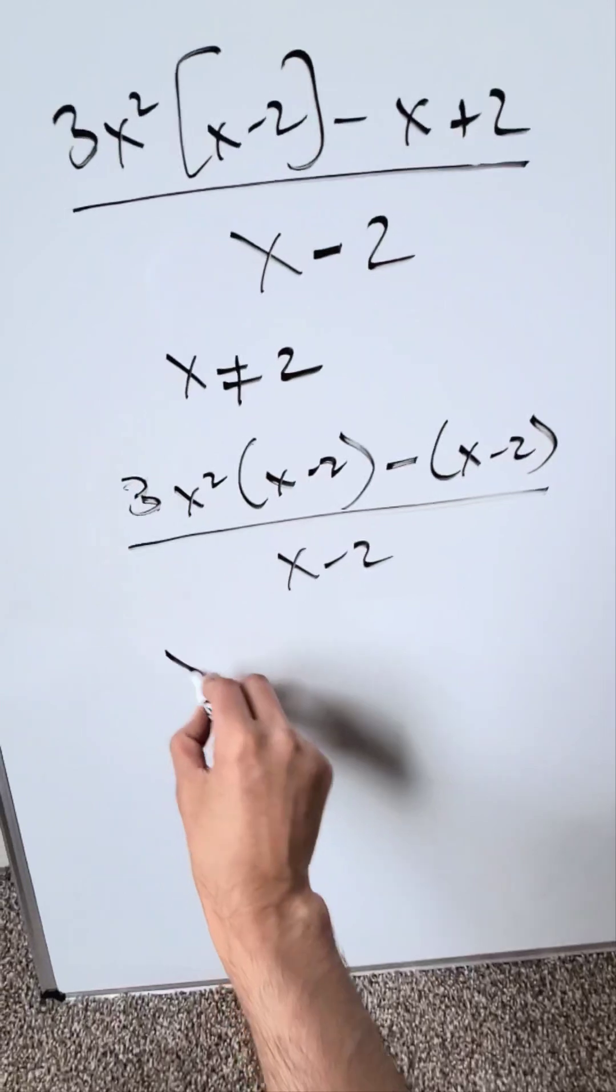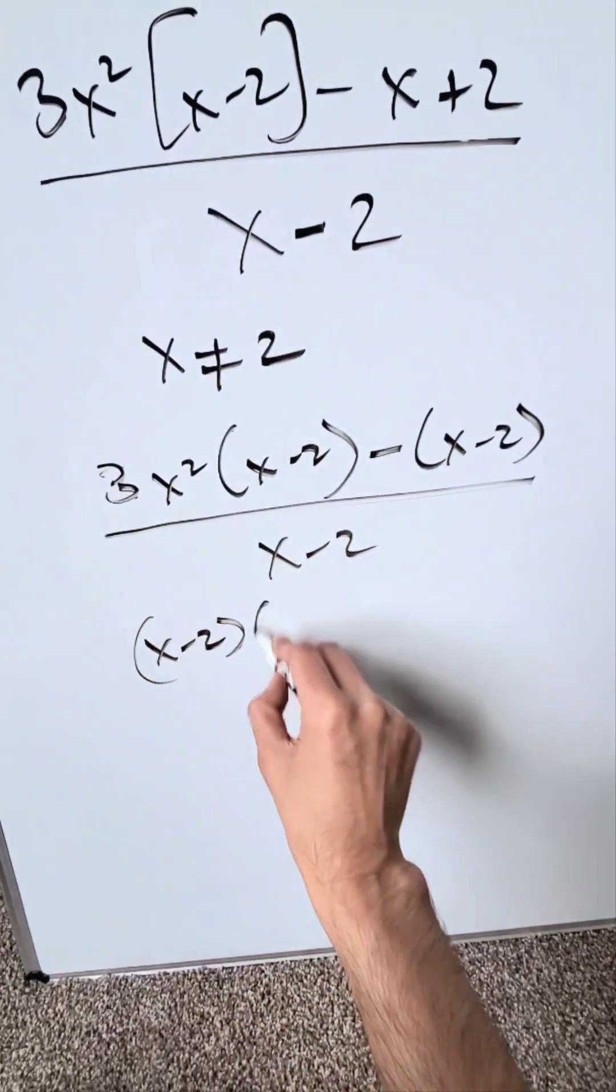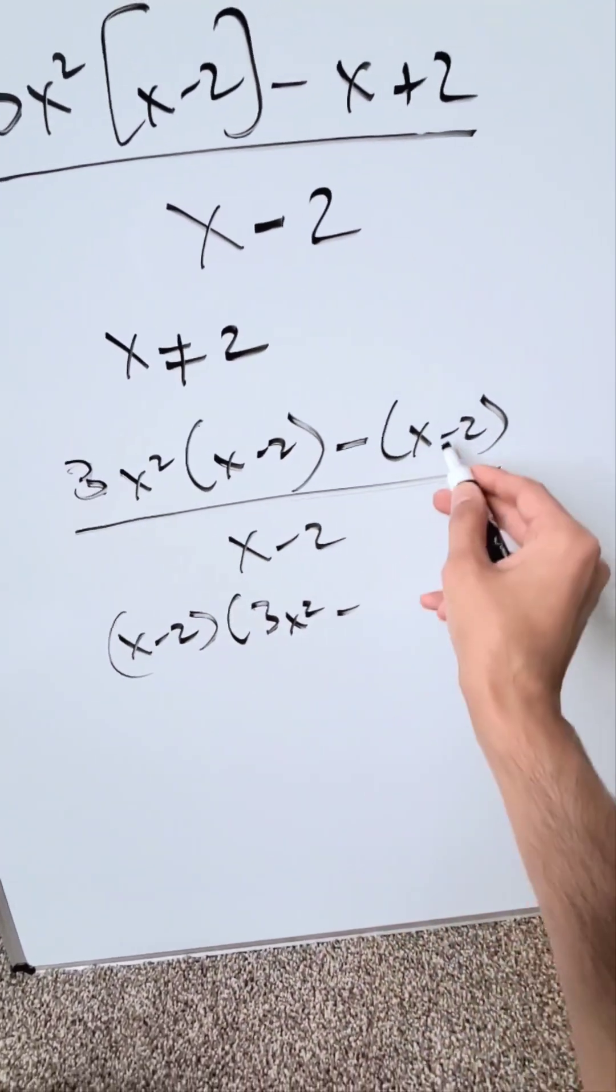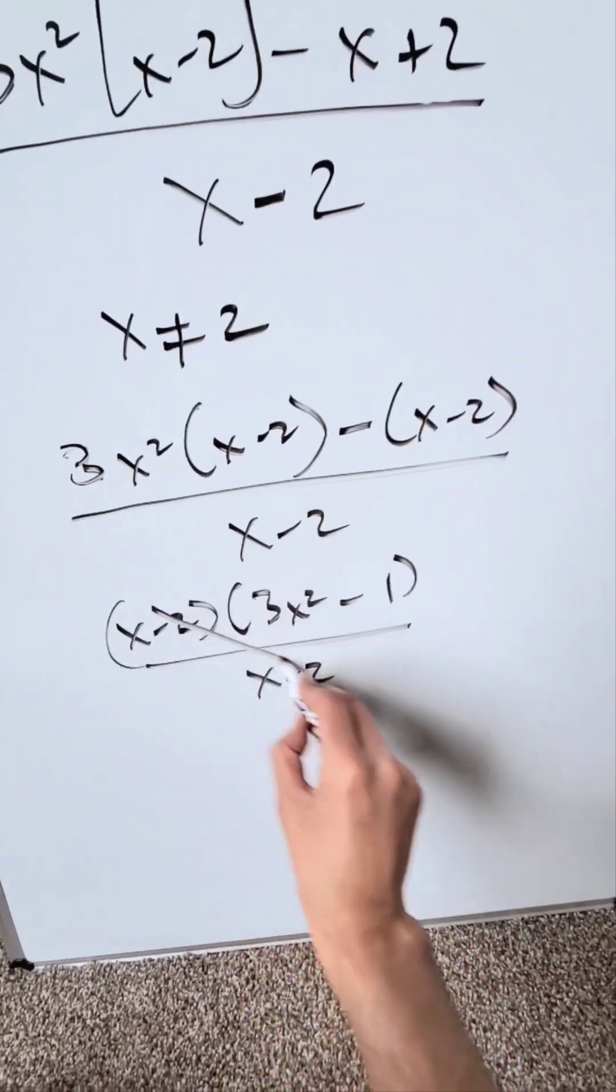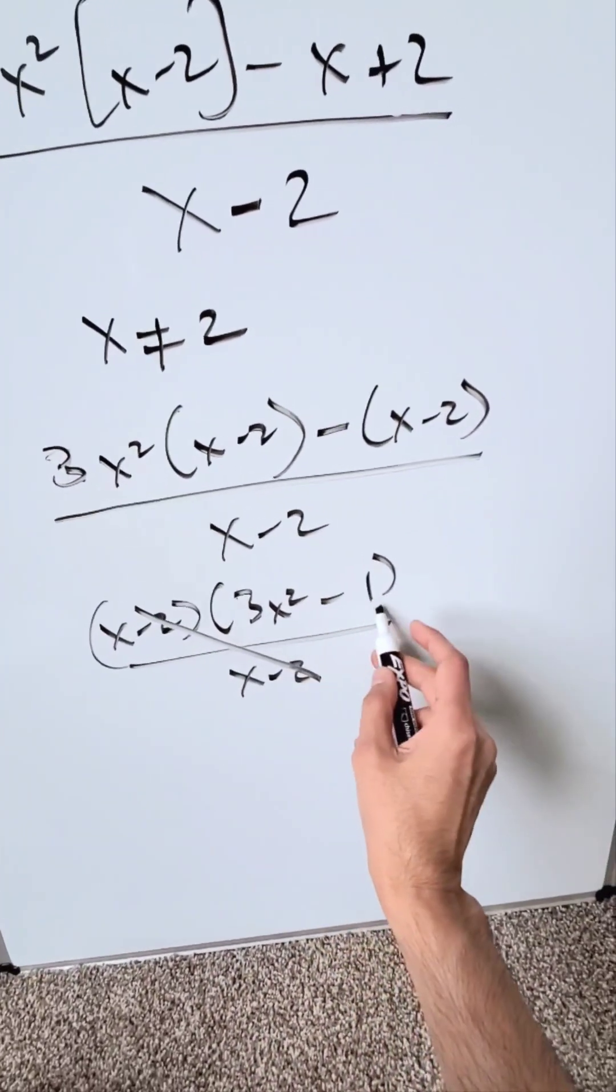You isolate (x minus 2) in the numerator and it comes in here: 3x squared times (x minus 2) minus (x minus 2) all over x minus 2. These cancel out. You are left here with 3x squared minus 1.